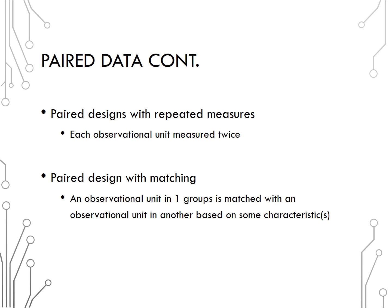The most important thing in identifying an observational design is to first decide if the data is paired or not. To help, decide if an observational unit in one group should be related to exactly one observational unit in the other. Then, if the data is paired, think about one observational unit. Is that observational unit measured twice, repeated measures, or is it matched with a different observational unit that is similar, matching?